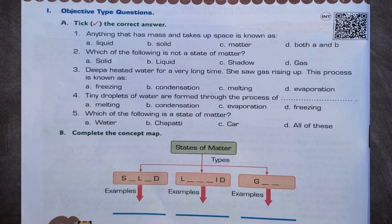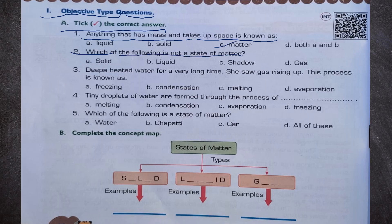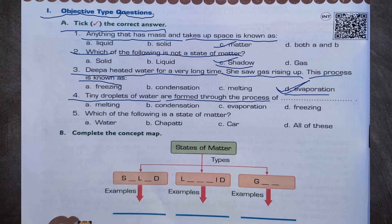Exercise. Number 1, objective type questions. A: tick the correct answer. Number 1: Anything that has mass and takes up space is known as matter — answer C. Number 2: Which of the following is not a state of matter? Solid, liquid and gases are states of matter, so shadow is not a state of matter — answer C. Number 3: Deepa heated water for a very long time and saw gas rising up. This process is known as evaporation — answer D. Number 4: Tiny droplets of water are formed through the process of condensation — answer B. Number 5: Which of the following is a state of matter? All of these are states of matter — answer B.